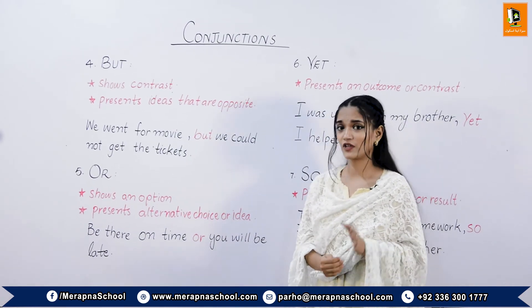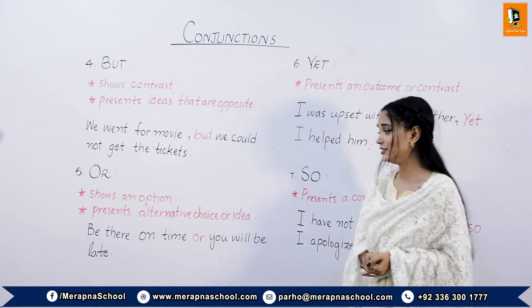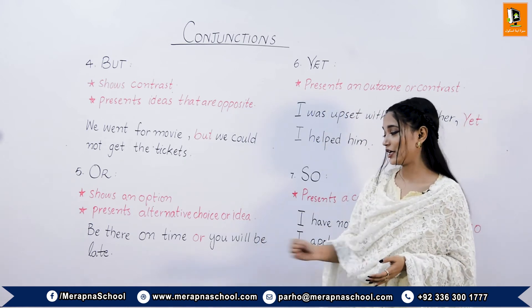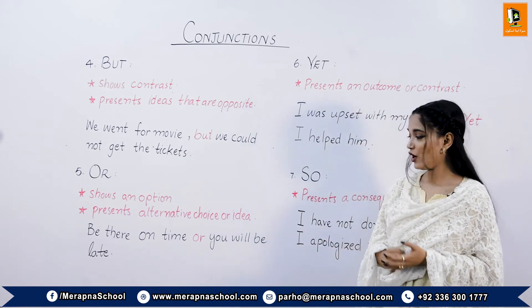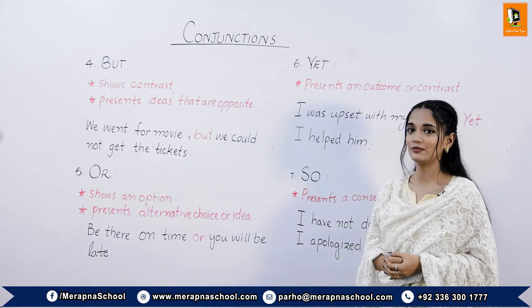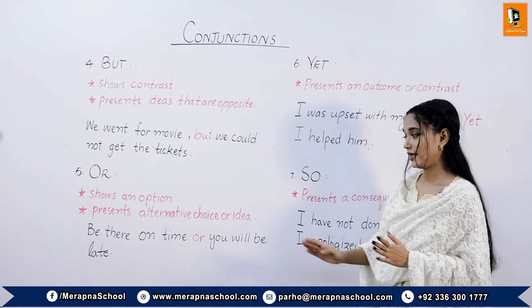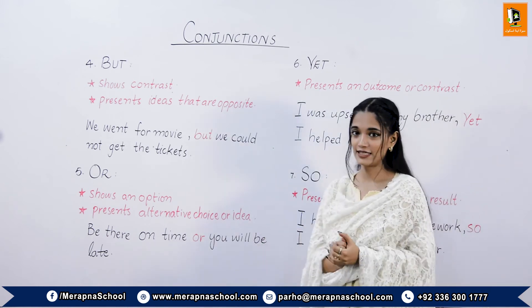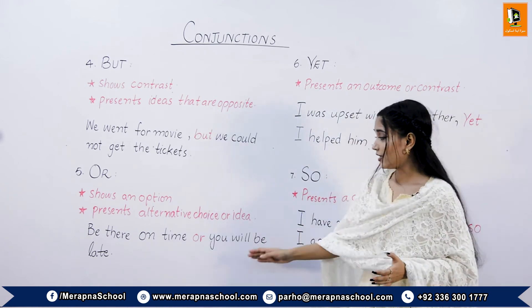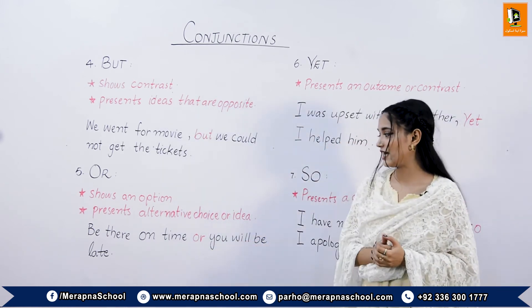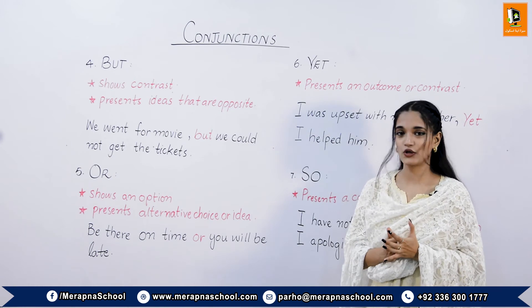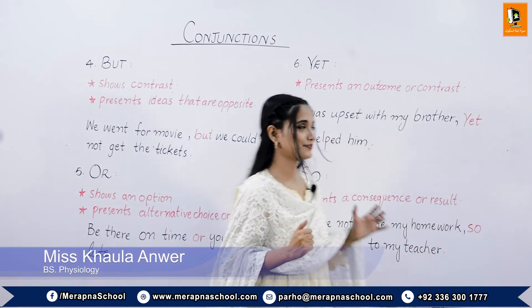The fifth coordinating conjunction is 'or'. It shows an option and it presents an alternative choice or idea. For example: 'Be there on time or you will be late.' In the second half of the sentence, it is showing the alternative choice.